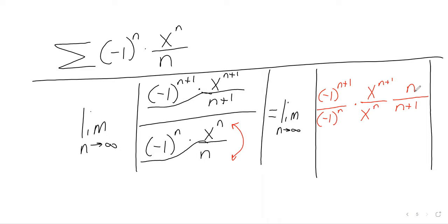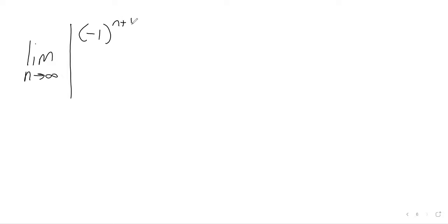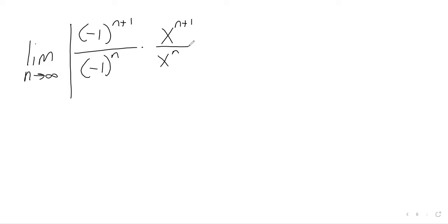I'm going to simplify this. We can copy this over: negative one to the n plus one over negative one to the n, x to the n plus one over x to the n, and then n over n plus one.